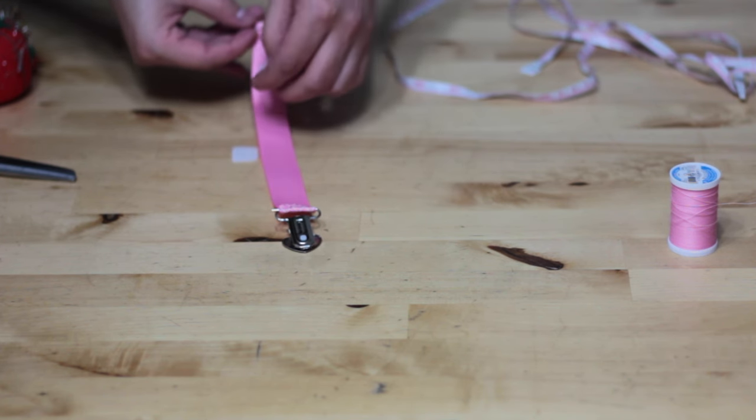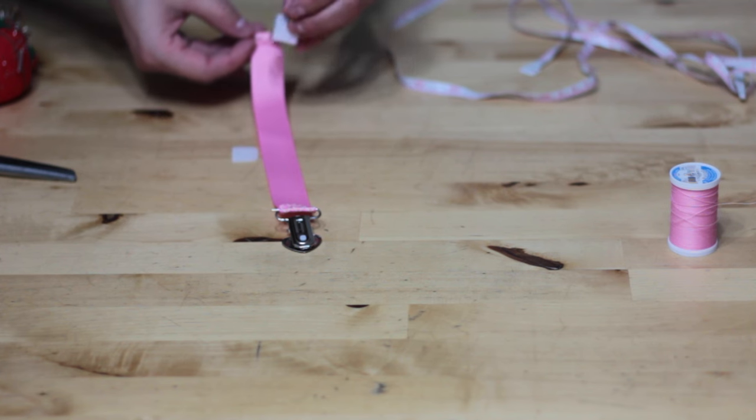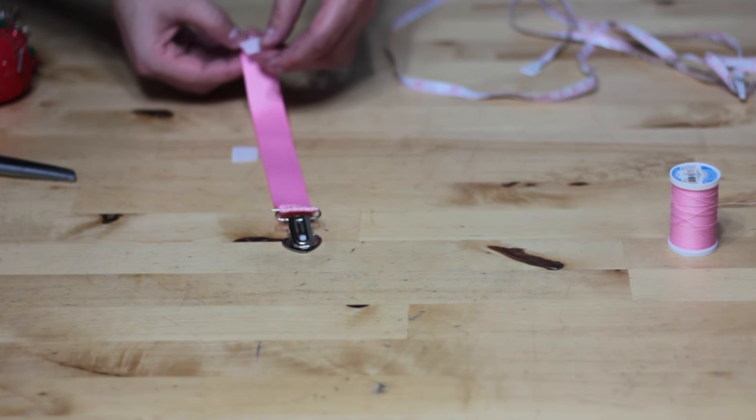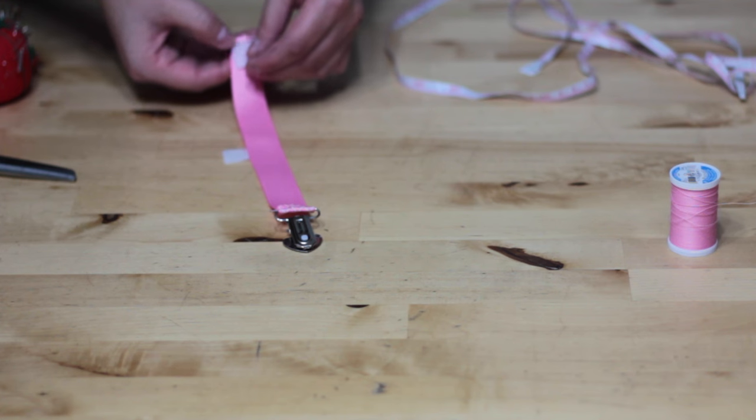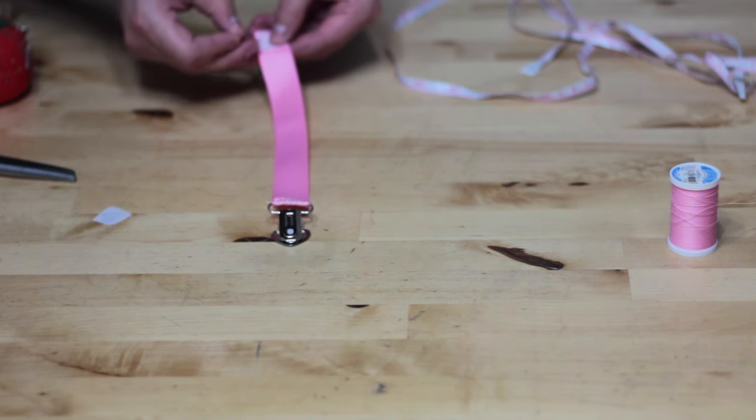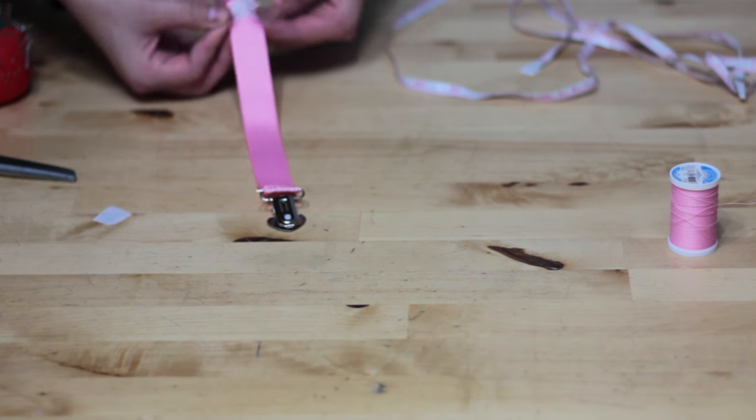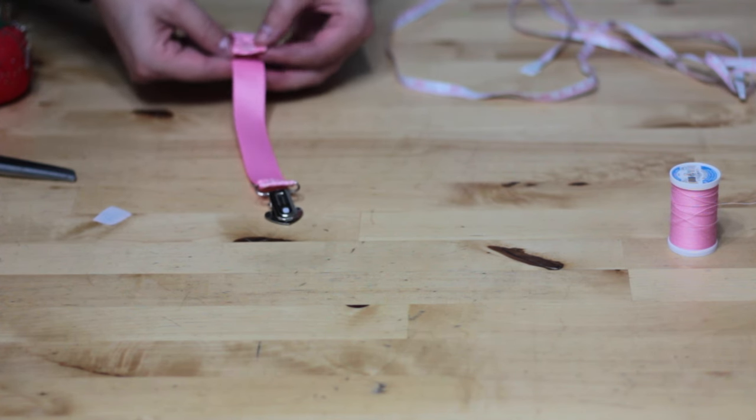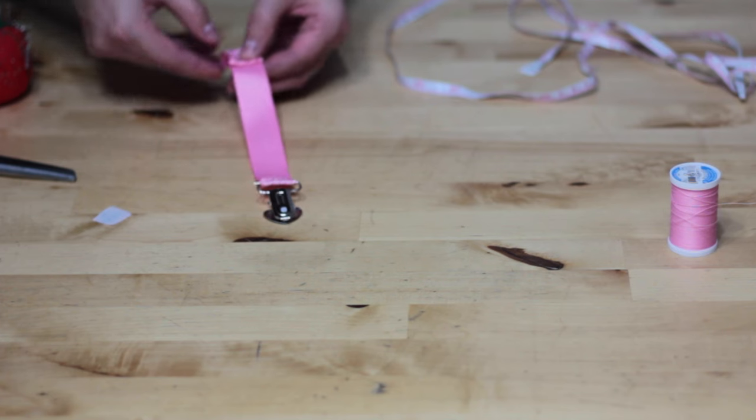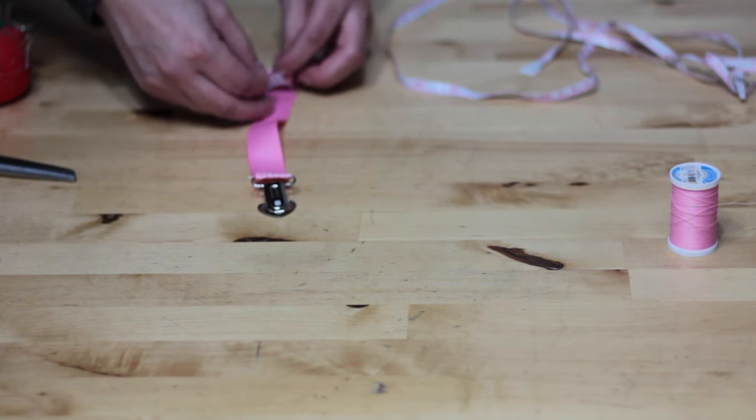And I'm putting the velcro kind of where it needs to be to cover it. You have the top portion of the velcro in place. Go ahead and fold over the ribbon slightly so that you can figure out where you need to have the second half of the velcro and pin it down.